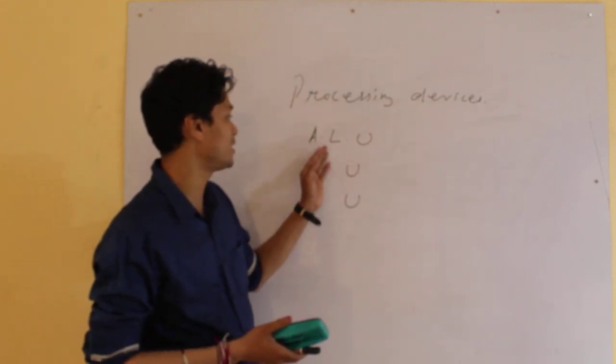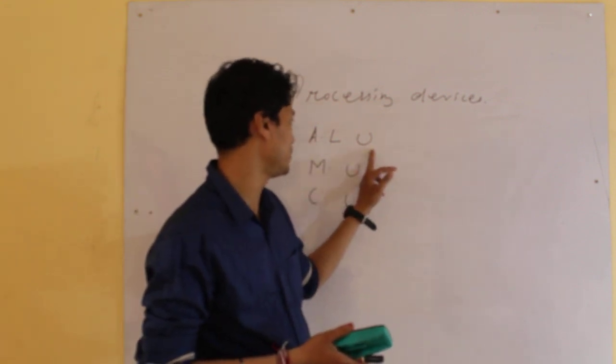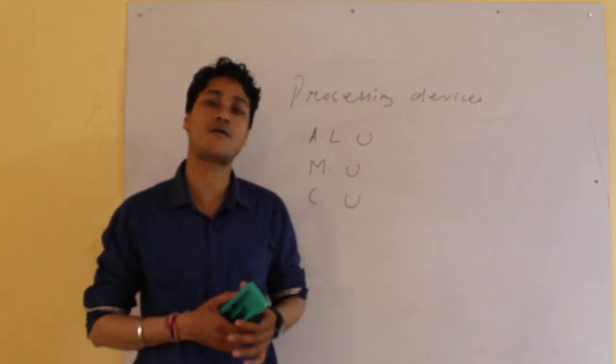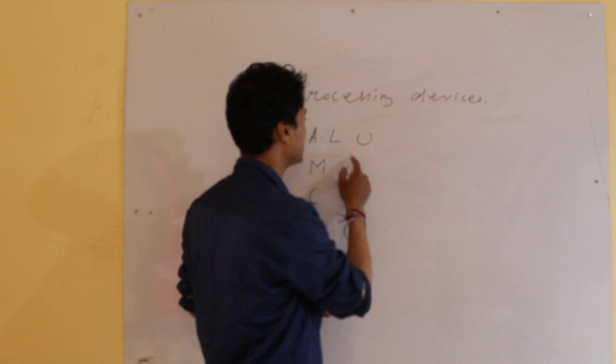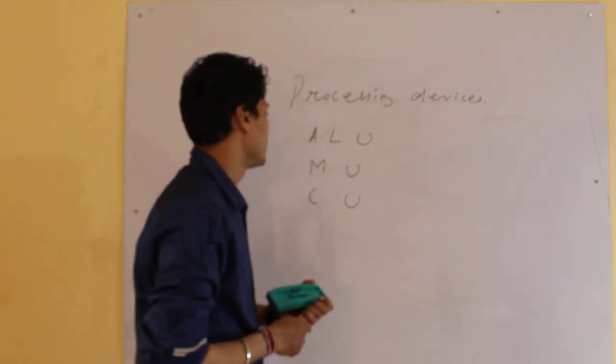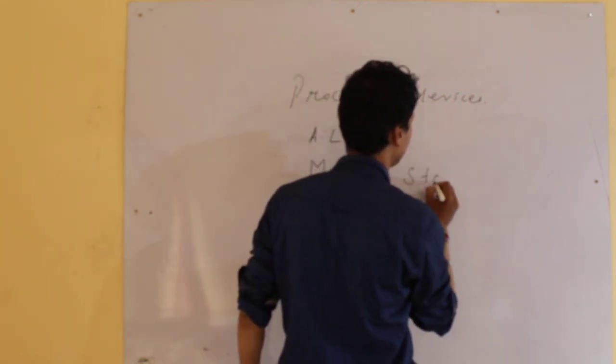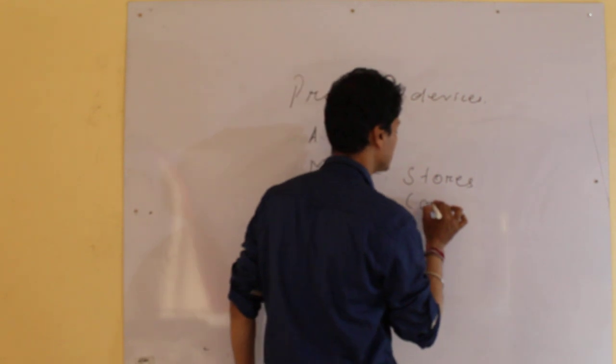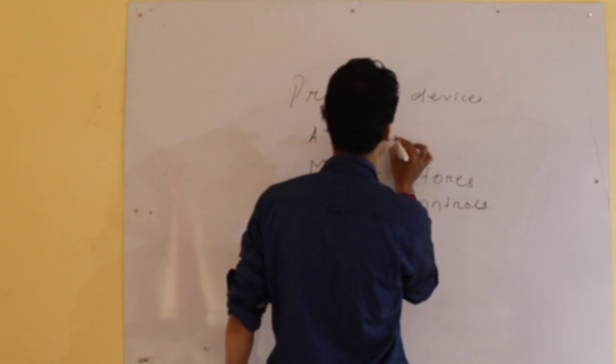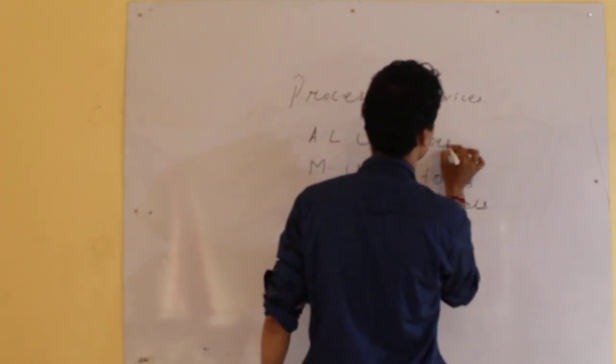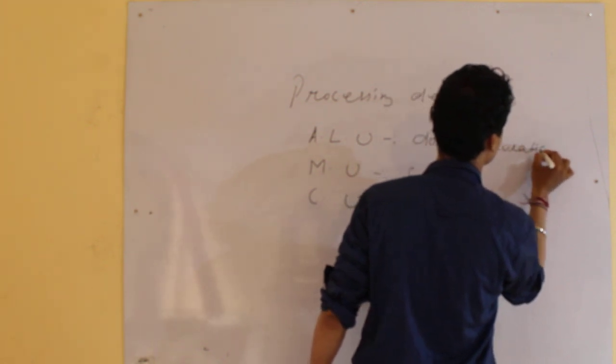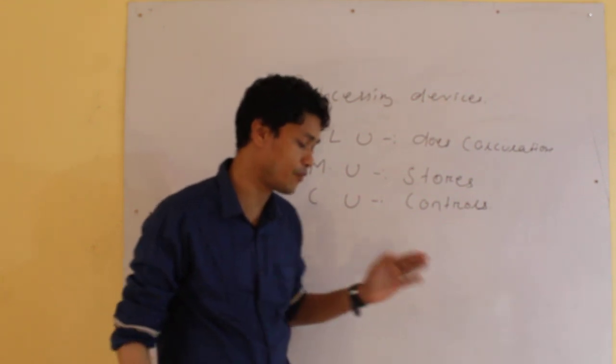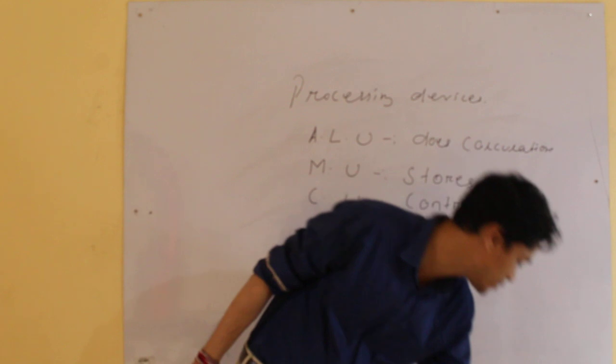And this CPU is divided into three different types. ALU stands for Arithmetic Logic Unit, that means here all the calculations are performed. And after this ALU, what is this? This is called MU. This MU stands for Memory Unit and this stores the data and information. And CU stands for Control Unit. It controls and does all the calculations here. Children, did you understand today the different parts of the CPU and why this CPU is called as the brain of any computer system?